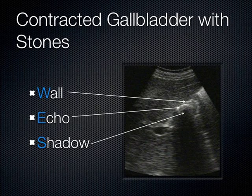CCK causes the gallbladder to contract and squirts the bile into the duodenum. When the gallbladder contracts around a stone, patients get really symptomatic — a lot of biliary colic, colicky crampy severe pain in the right upper quadrant or epigastric area. We go to the bedside and see a contracted gallbladder around a stone. All we see is the shadow coming out of the liver — it's even hard to make out the anterior gallbladder wall.